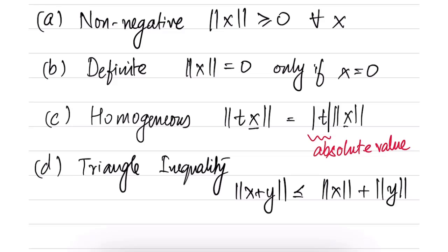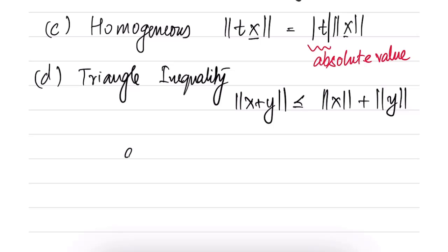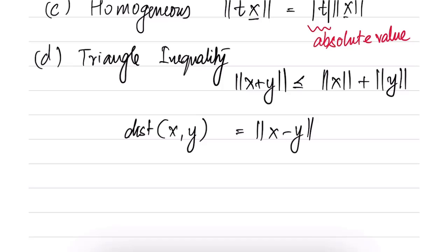This triangle inequality in particular is interesting because it allows us to define the distance function. So the distance between two elements x and y is given by ||x - y||. There is also an associated definition of a norm ball. A norm ball is the set of all x such that ||x|| is less than or equal to 1. So this is the unit norm ball.